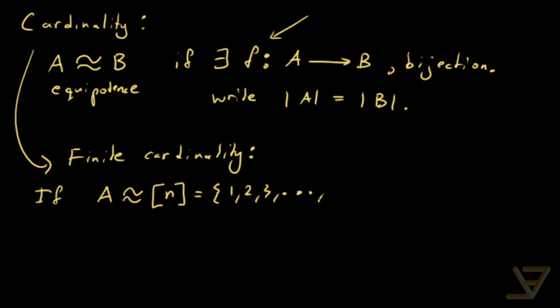3, all the way through to N}, so the first N positive integers, then the cardinality of A is equal to N.